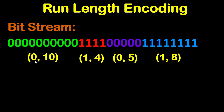Now we are going to write zeros since we have a group of zeros, then the number of zeros in this group. We have 1, 2, 3, 4, 5, 6, 7, 8, 9, 10. So we are going to write 10 like this.